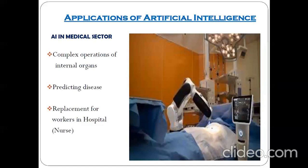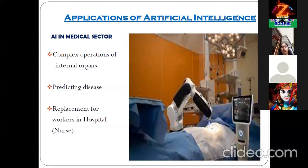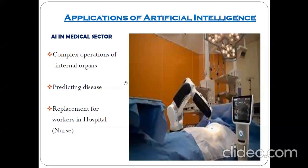Next is AI in the medical sector. Complex surgeries and operations on internal organs are very difficult for doctors. It is also possible now to develop robots that can perform complex operations on internal organs. Even doctors, being human, have emotions, and a number of operations fail because doctors could not control their emotions during complex operations.